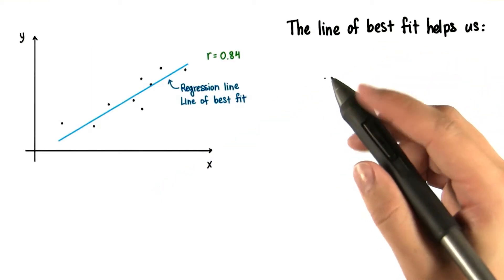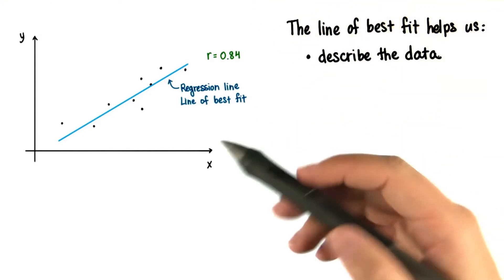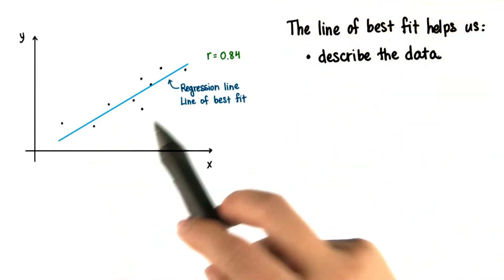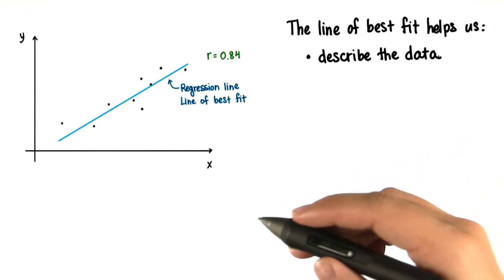We care about the line of best fit because it helps us describe the data. In other words, we can describe the patterns shown by the data. This line makes it easier to see the relationship between x and y.